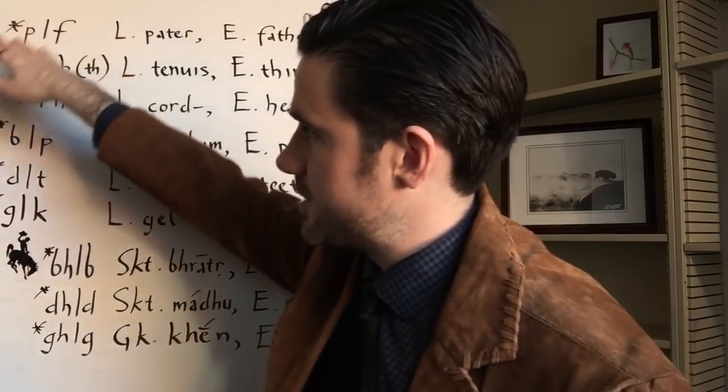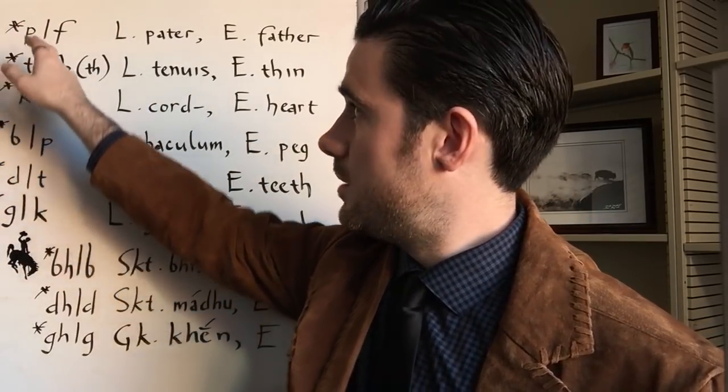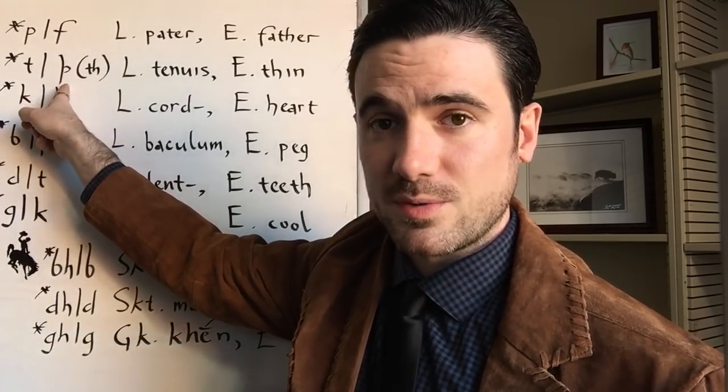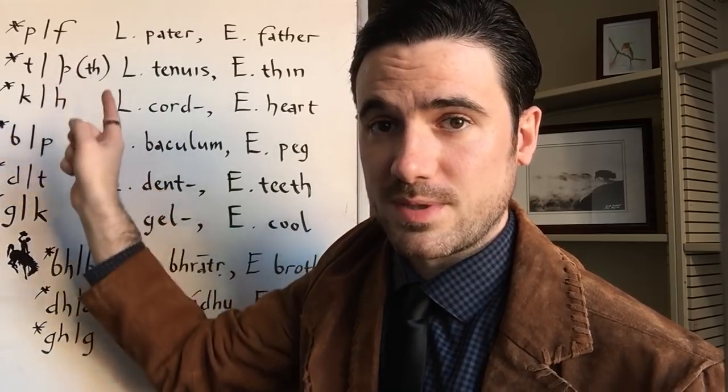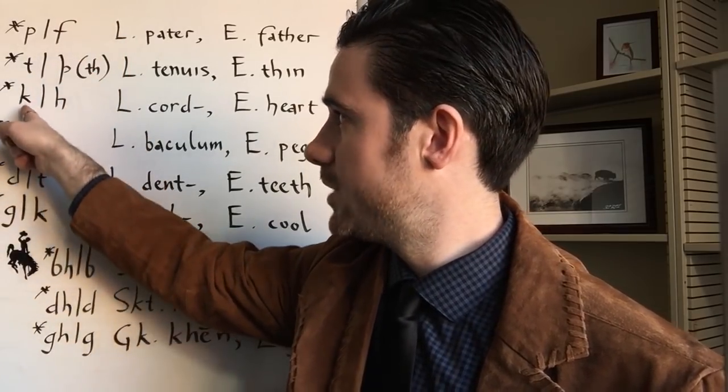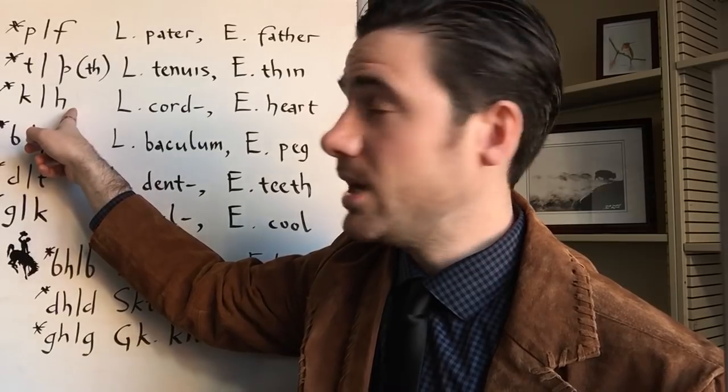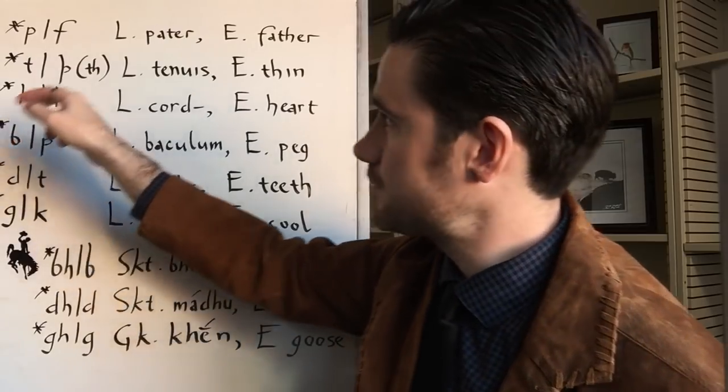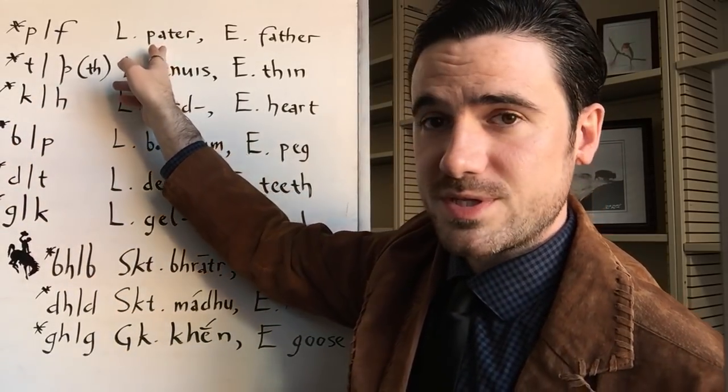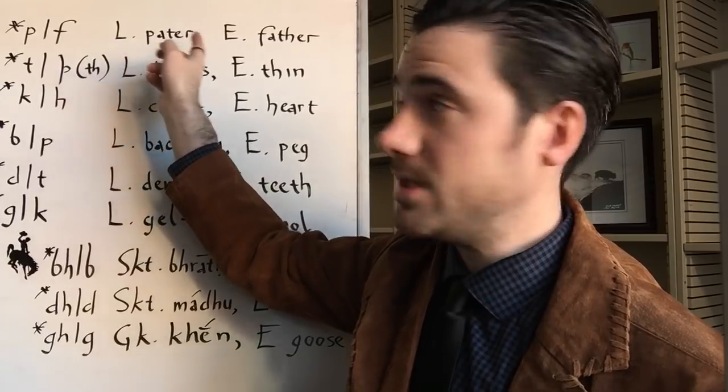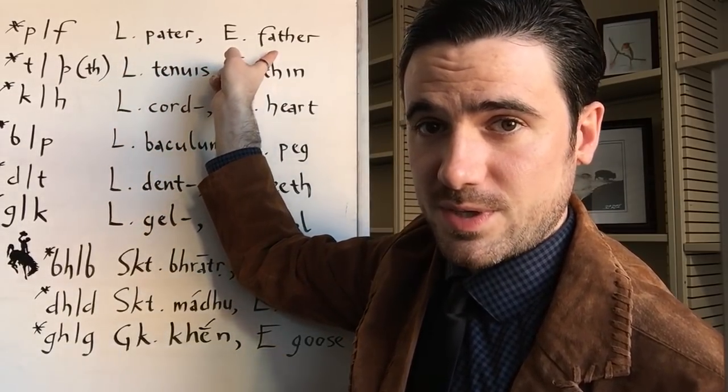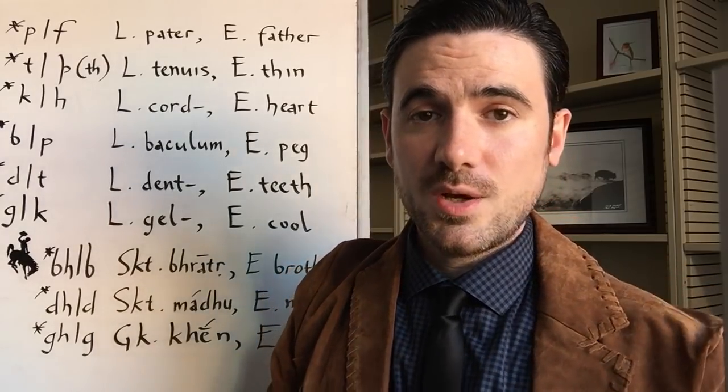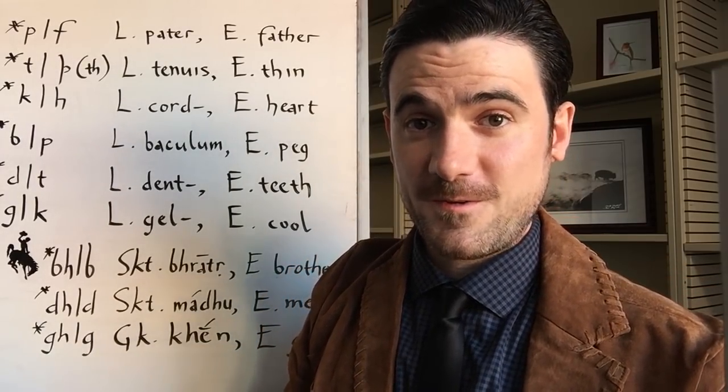So the first cluster of changes under Grimm's Law are P to F, T to TH, which in old Germanic languages like Old Norse and Old English is typically written with the letter thorn, which looks a little bit like a P with an extra bar at the top, and K to H. In linguistics terms, voiceless stops become homoorganic voiceless fricatives. So P to F, we see for instance Latin pater keeps the P, but English father has the P turned into an F. Another good example of this would be Latin piscis fish, where English has fish, F.